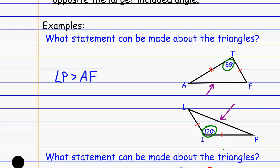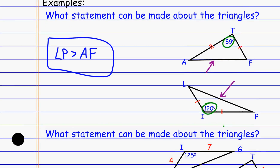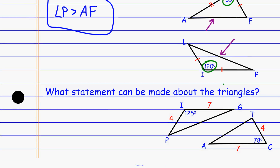Of course I could say that the other way — AF is less than LP — but that's the statement that can be made. In this next one, the same kind of thing: what statement can be made about the triangles? I'm looking for the hinge theorem again. I see that this side is congruent to this side, and these guys are congruent. The angle in between is not congruent, which means the side across from those has the same relationship as these angles. Because the 125 is bigger, that side PG has to be larger than the side across from the 78-degree angle, AT. So the conclusion is that PG is greater than AT.